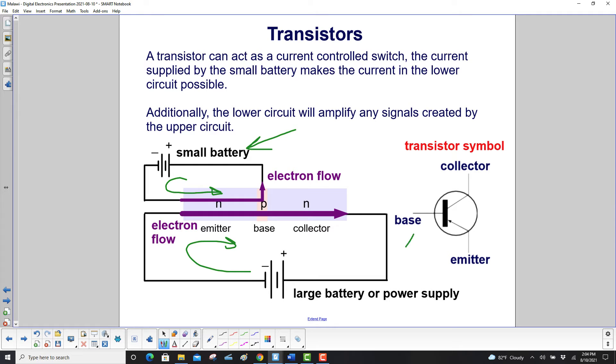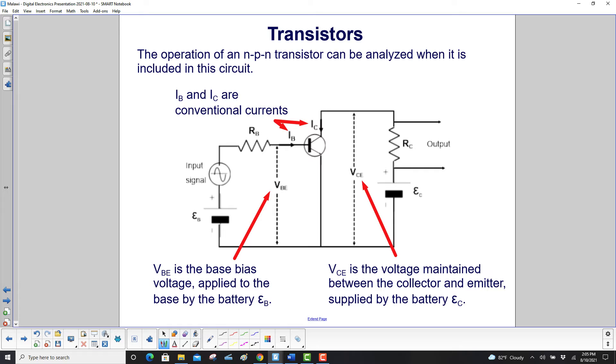Here's the transistor symbol again. The base is here, the emitter here, and the collector here. The operation of an NPN transistor can be analyzed in this circuit. We're showing the direction of conventional currents: current entering the base and current entering the collector. VBE, or base-emitter voltage, is the base bias voltage applied by battery EB. VCE is the voltage maintained between the collector and emitter, supplied by battery EC. Here's your output current that will operate electronic gear.